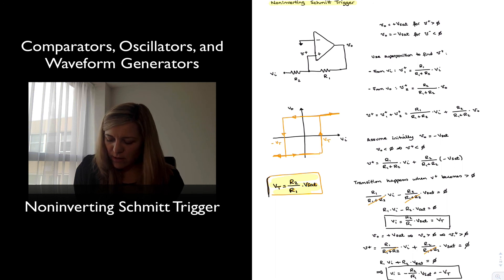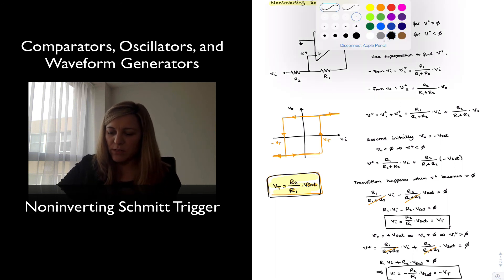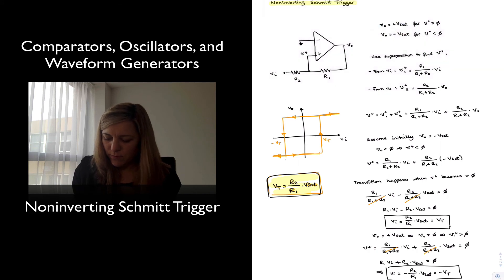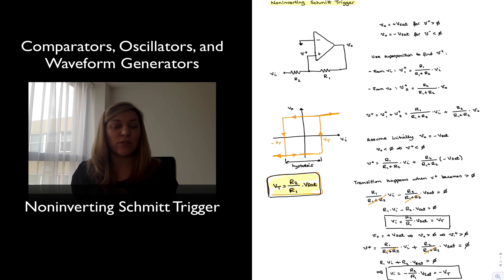So that's an important expression. Vt equals R2/R1 times Vsat. Notice that just as in the previous case, we have an amount of hysteresis, which is equal to two times Vt. And Vt is again controlled by the ratio of R2 to R1, just like in the previous case.